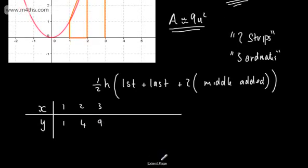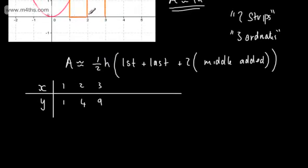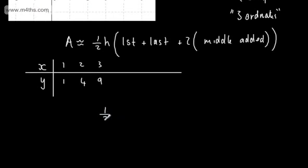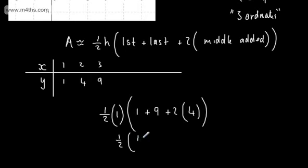Now let's apply the trapezium rule to get an approximate area. The area is approximately equal to one-half times h, where h equals 1 — the difference in the x-coordinates. We take the first value, which is 1, plus the last value, which is 9, plus two lots of what's left in the middle, which is 4. So: one-half times (1 + 9 + 2×4) = one-half times 18 = 9. The approximate area is 9 units squared.